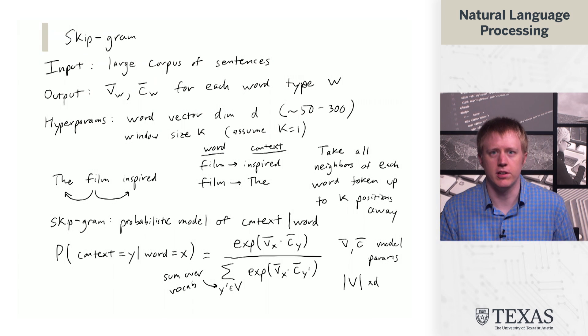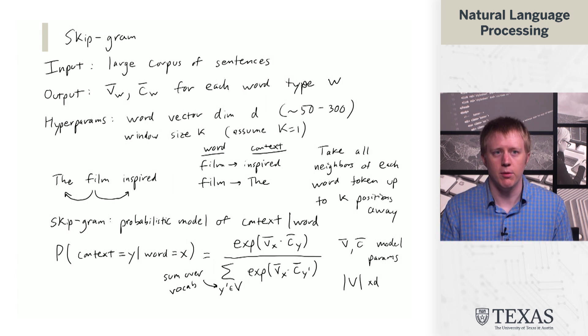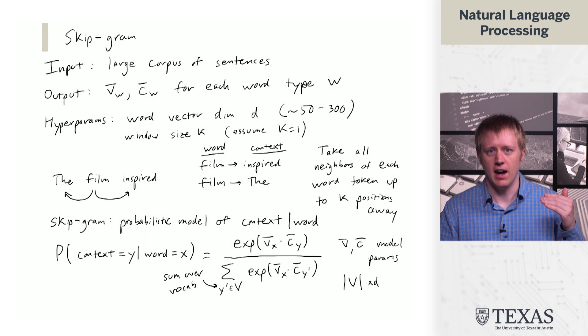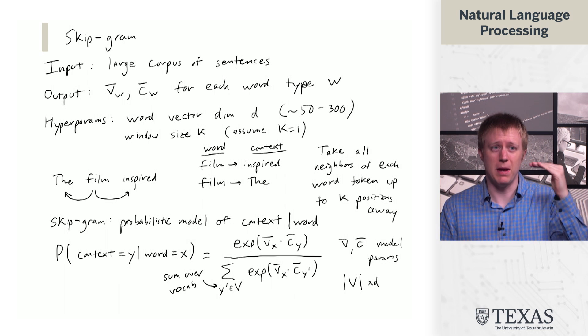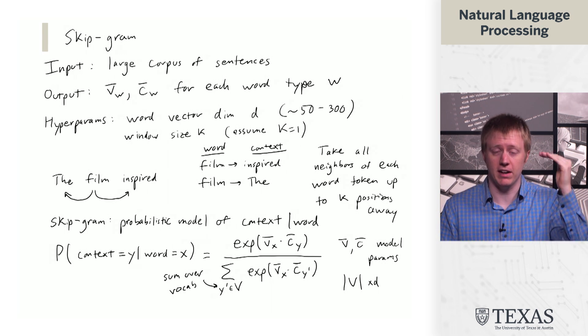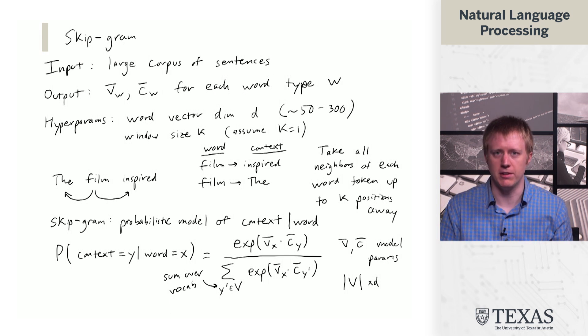So things I want to point out are that this bottom sum is over the vocabulary. So if we have 10,000 words that we've seen in our data, this is going to be a sum over all 10,000 of them. And then V and C are model parameters.